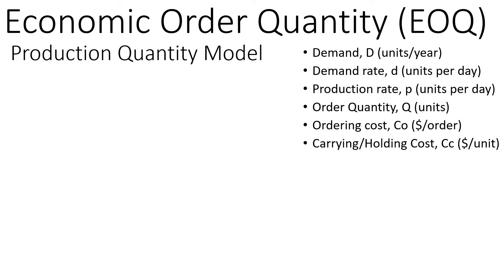Economic Order Quantity Production Quantity Model: how much should we order in a production facility? We'll see that theory in this video. The notation includes total demand per year (capital D), demand rate per day (small d), production rate (p), order quantity (Q) as you've seen before, ordering cost per order, and holding cost per unit.